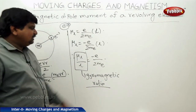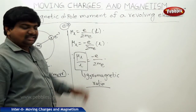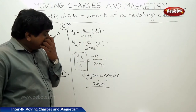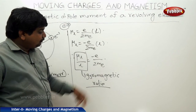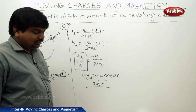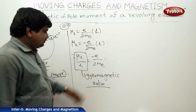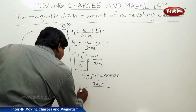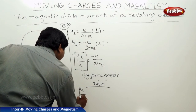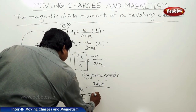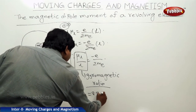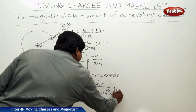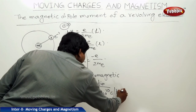Substituting the charge of electron E equal to 1.6 × 10⁻¹⁹ Coulombs and mass of electron Me equal to 9.1 × 10⁻³¹ kg, we get the gyromagnetic ratio mu_L divided by L equal to 8.8 × 10¹⁰ Coulombs per kg.